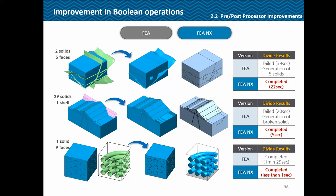Here we compare a couple of boolean operation examples. For two solids and five faces division, FEA failed after 39 seconds, while FEA NX completed successfully in 22 seconds. For 29 solids and a shell, FEA failed after 20 seconds whereas FEA NX completed in just five seconds. For one solid and nine faces, FEA succeeded but took 1 minute 29 seconds, while FEA NX completed in under one second — all thanks to the 64-bit processor and graphics engine.